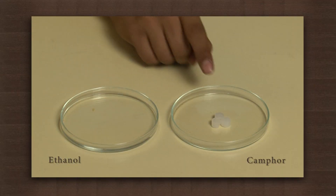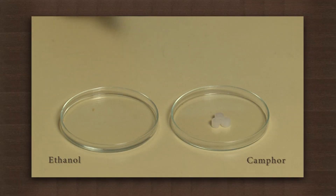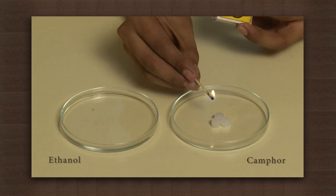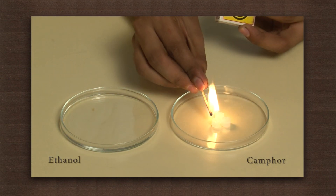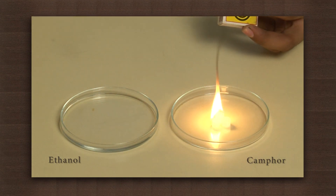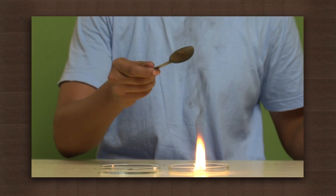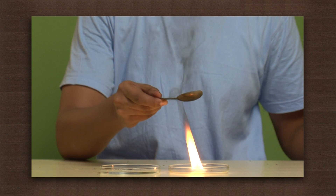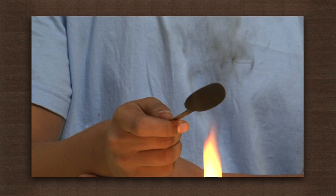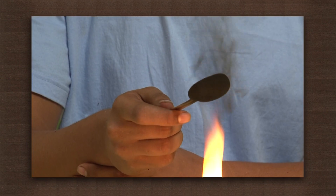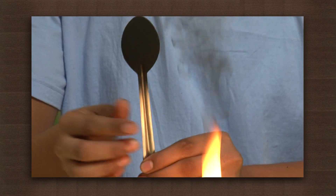We need ethanol and camphor tablets. Light a matchstick and set the camphor tablets on fire. Notice that camphor burns with a yellow flame. Now hold a spoon over the flame — you can see that soot has formed on it.